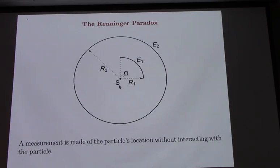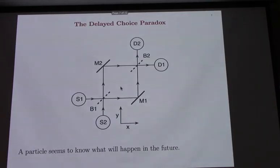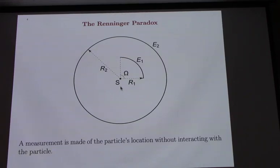Renninger paradox. This is an interaction-free measurement developed by Renninger. The idea is you release a particle from location S here and the particle expands symmetrically. It goes out to a semicircle E1 which is basically lined with detectors. So it goes out there and it could trigger a detector there which would make a flash on the screen, or it could continue going until it reaches E2 and makes a flash on that screen.